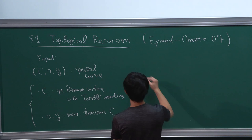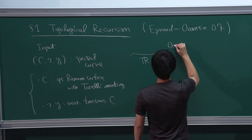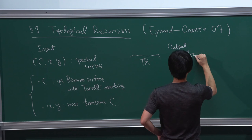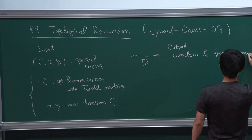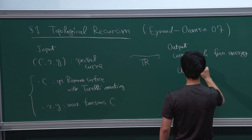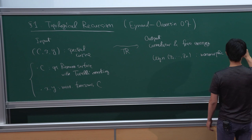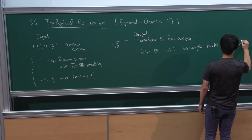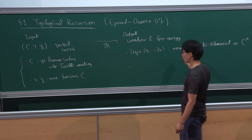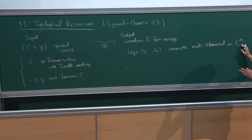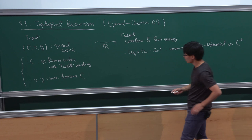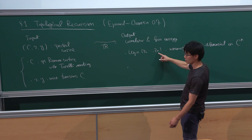For such data, topological recursion — let me write TR for short — gives as output the so-called correlator omega_{g,n} and free energy F_g. Omega_{g,n} is a meromorphic multi-differential on C to the power n. Locally it is some meromorphic function times dv_1 through dv_n.